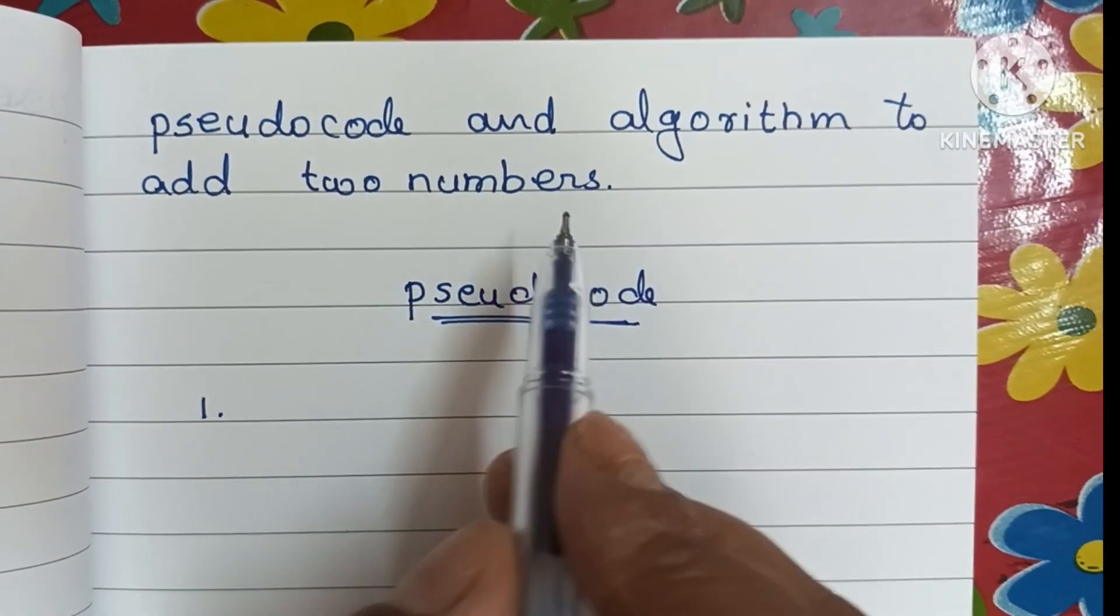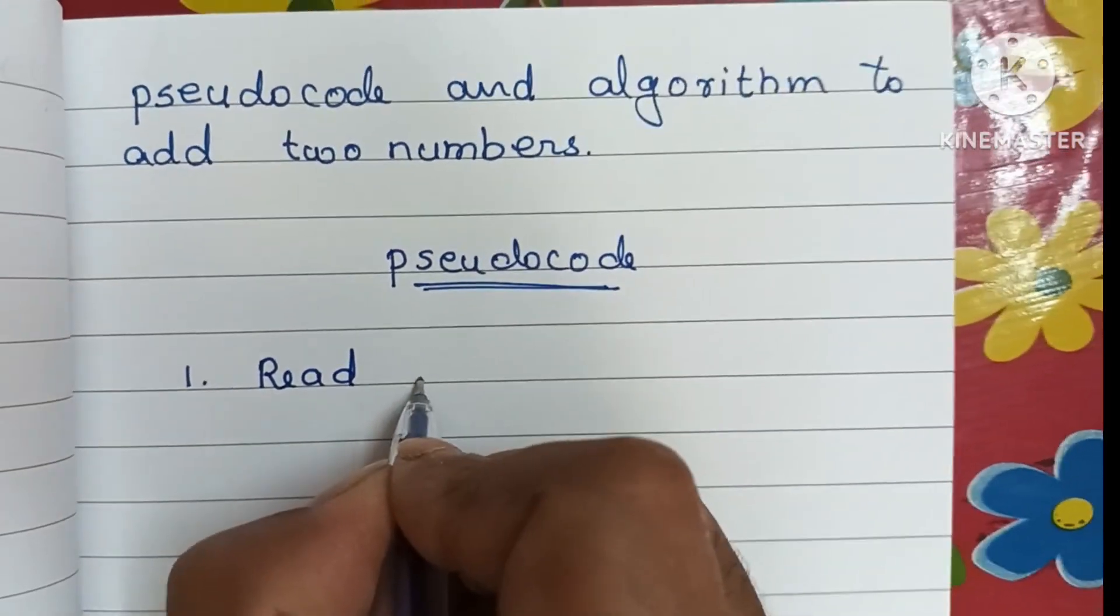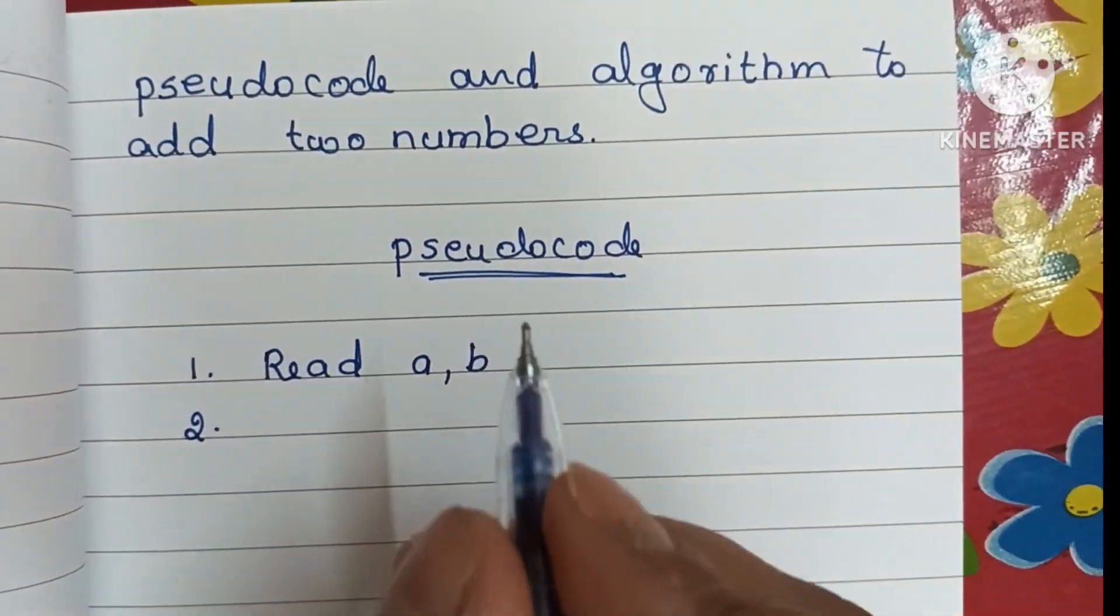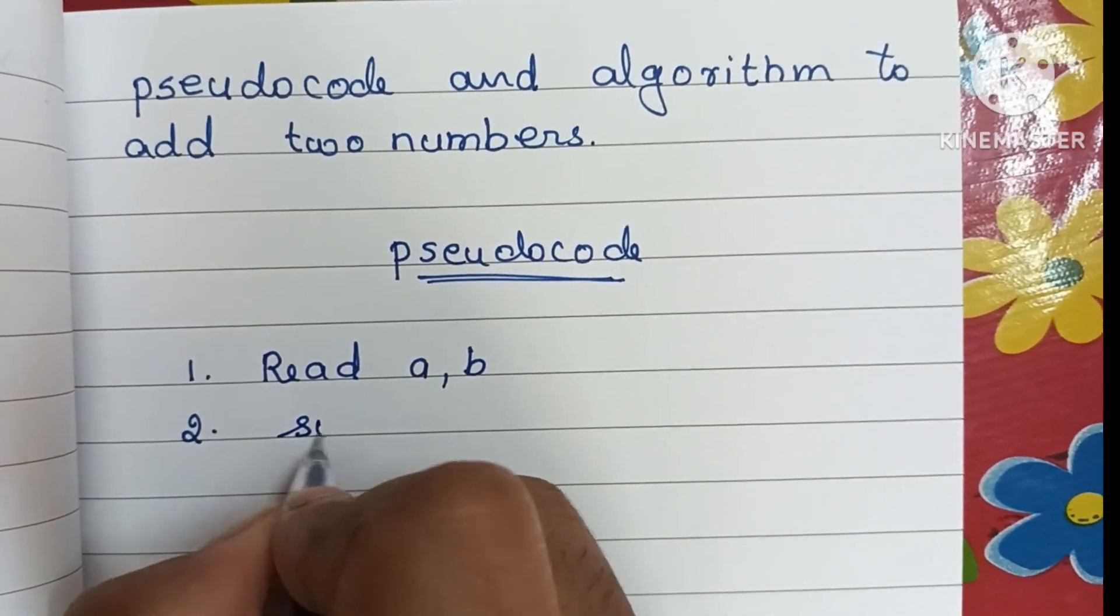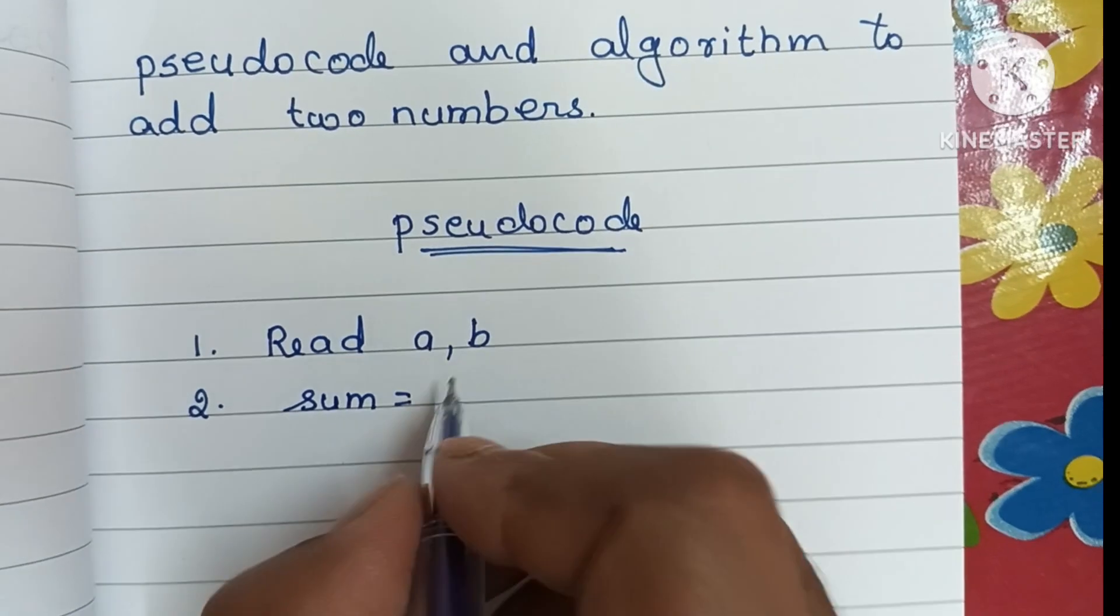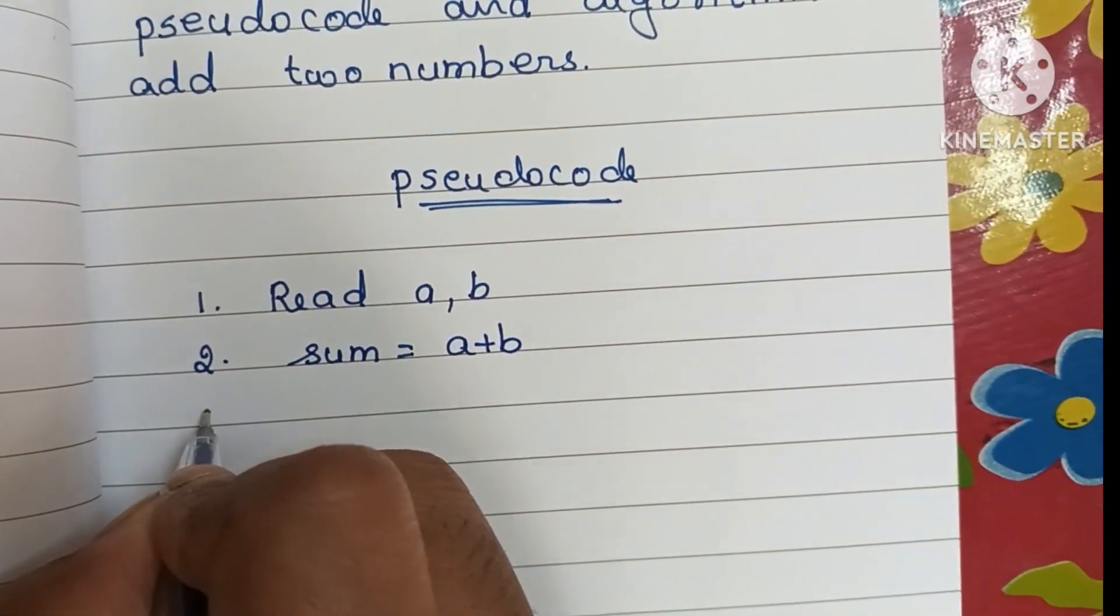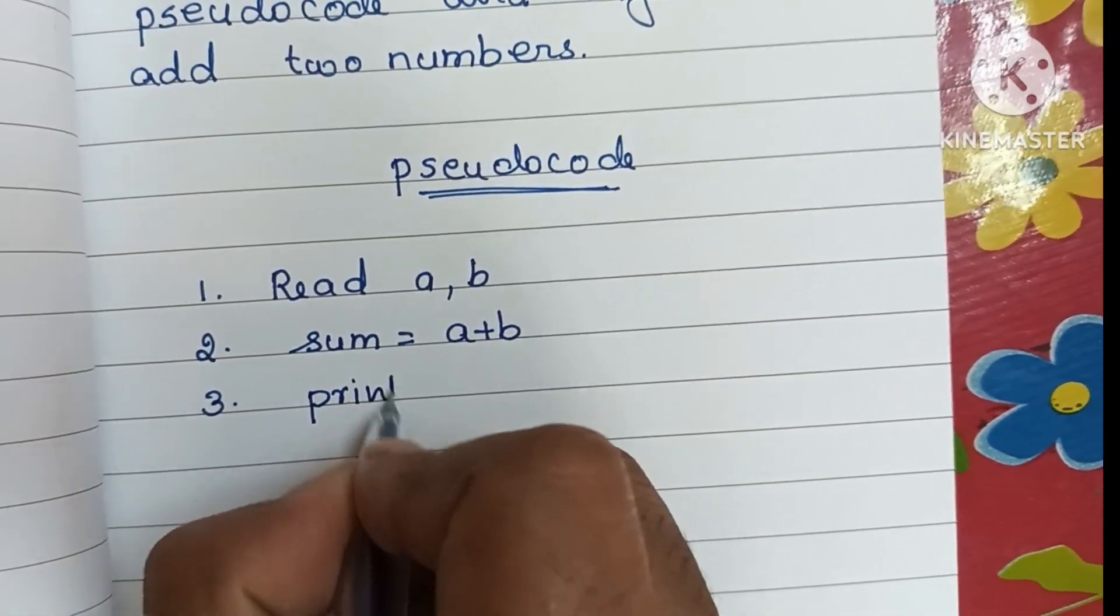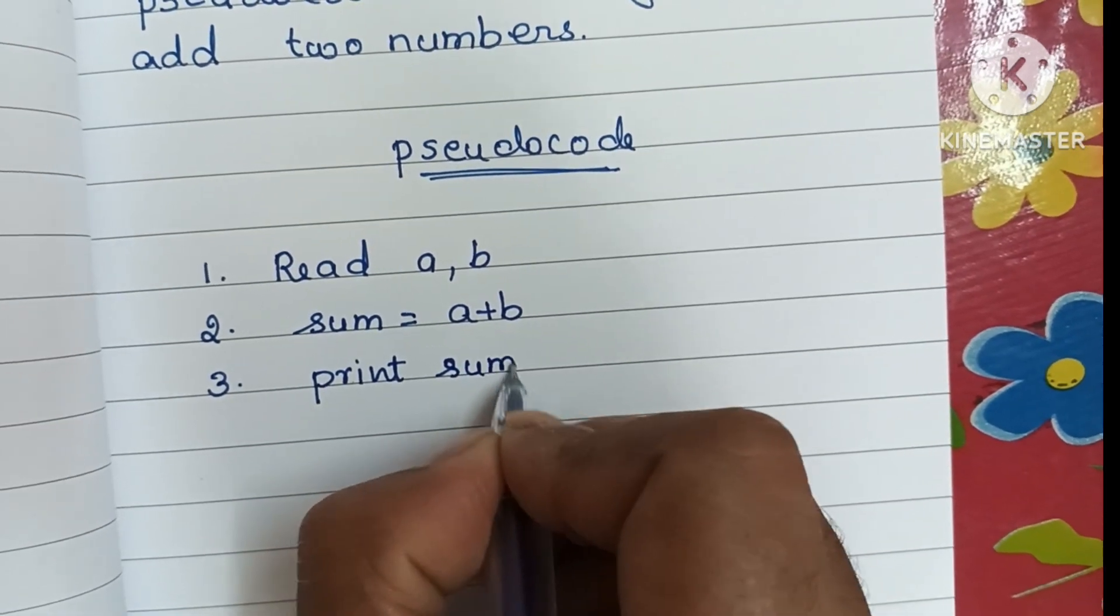To add two numbers, first we have to read two numbers: read a and b. Next, we have to write sum, which is used to store the sum value. Sum equals a plus b. Next, we have to print the sum value.